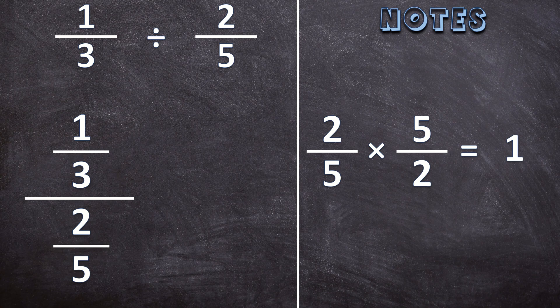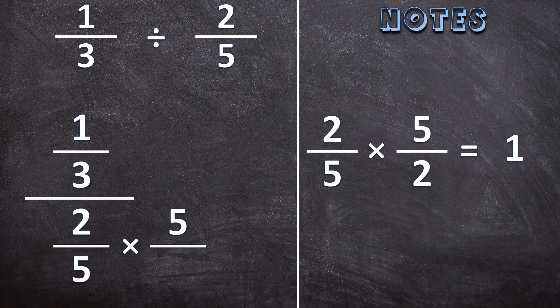Let's go back to the original question. So that 2 over 5 in the denominator, we're going to multiply with 5 over 2. Now let's go back to the notes.